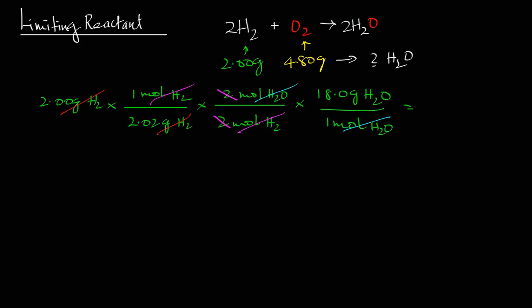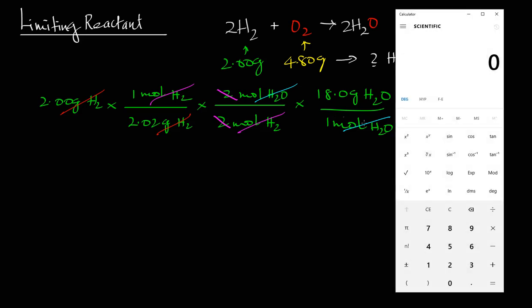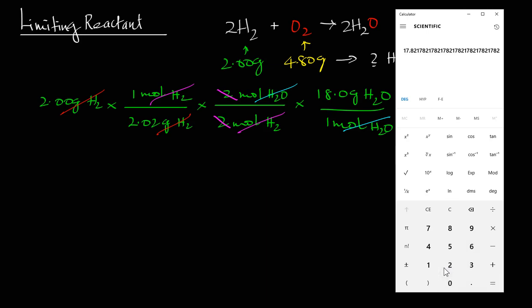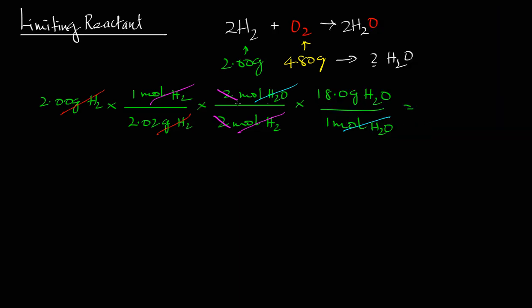Let's bring a calculator and do the math: 18 times 2 divided by 2.02 gives us 17.82178. We need to round this off to 3 significant figures, so we get 17.8 grams of water.